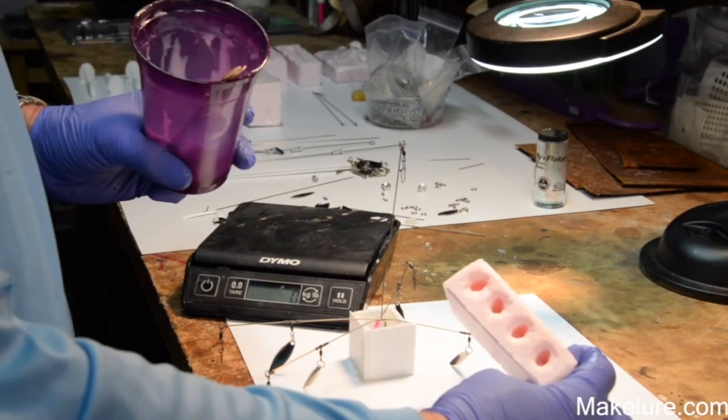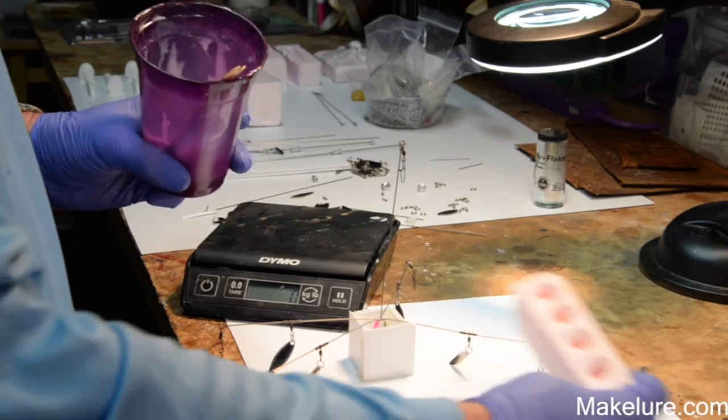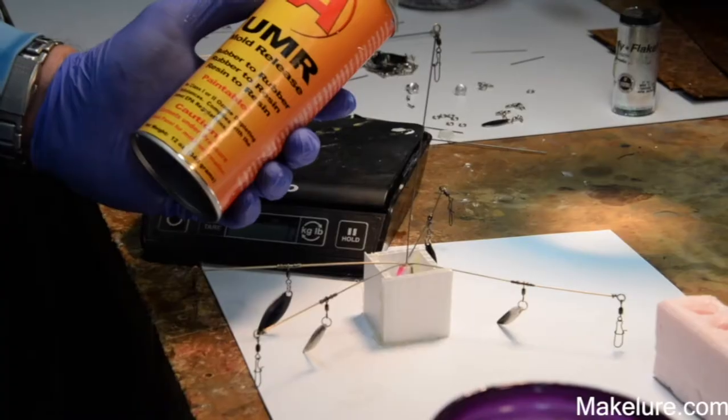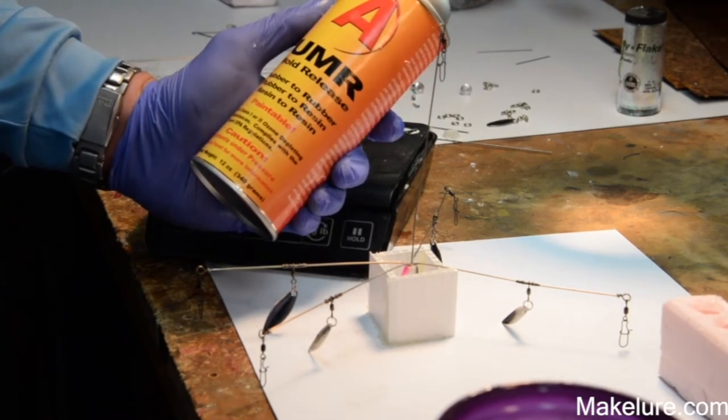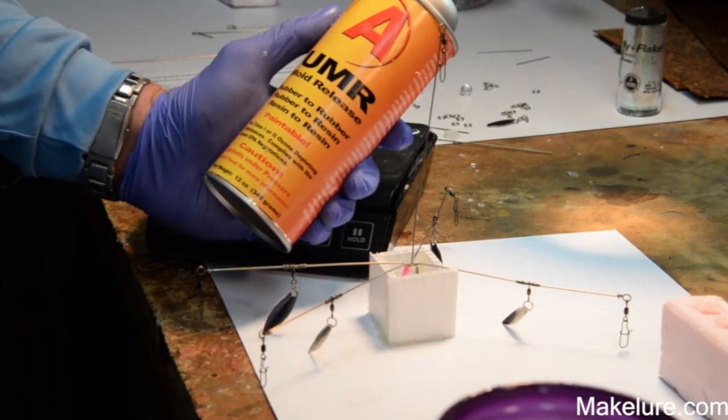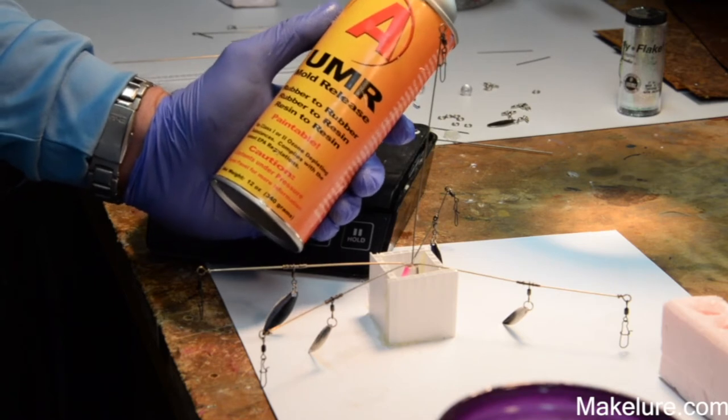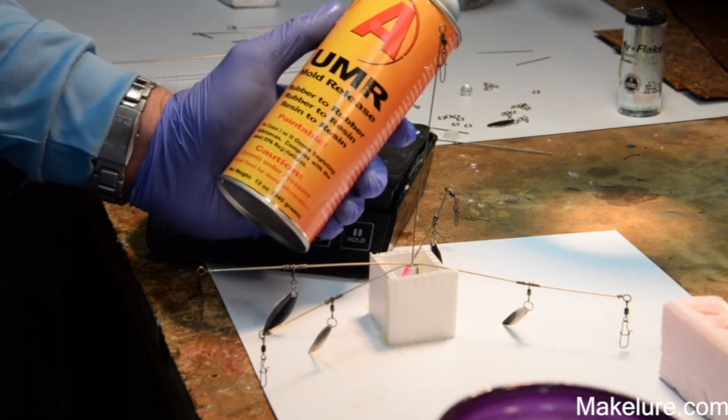That's an example of what we're talking about. We're going to spray this store-bought head with UMR mold release and then we're going to add the high strength two and then we're done with that for about 24 hours.